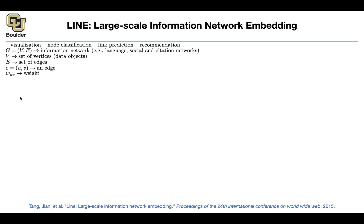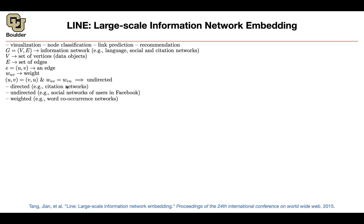The previous paper was about unweighted graphs; now we move towards weighted graphs. The previous paper was undirected; you can also work with directed graphs. Undirected means switching the roles of edges doesn't matter — same weight. A directed graph example is citation networks: one author cites another, but not necessarily vice versa. Twitter is directed; Facebook is undirected.